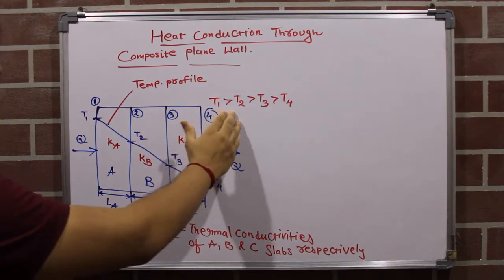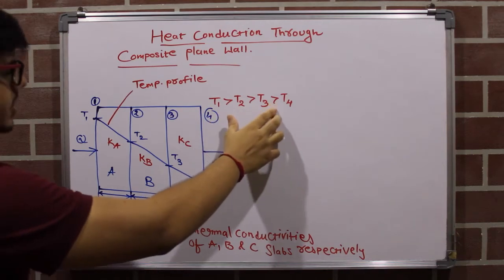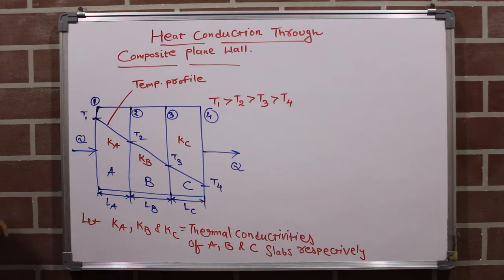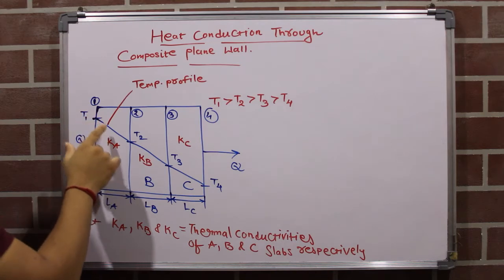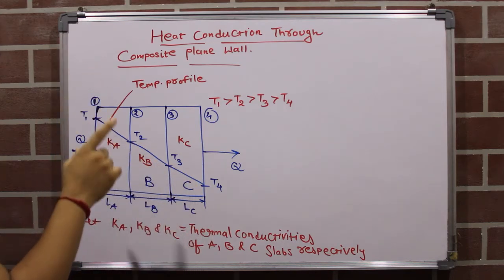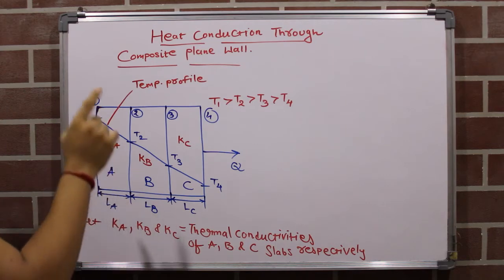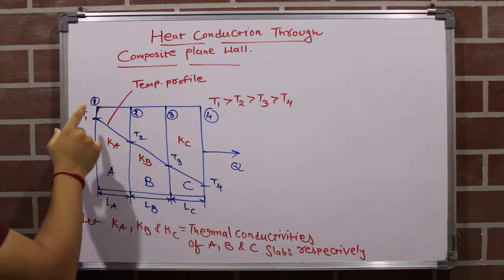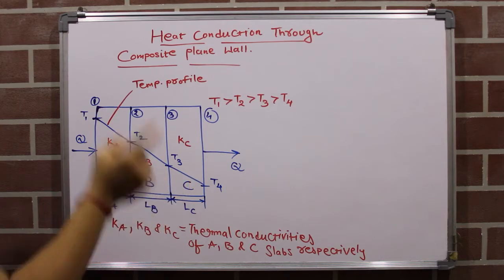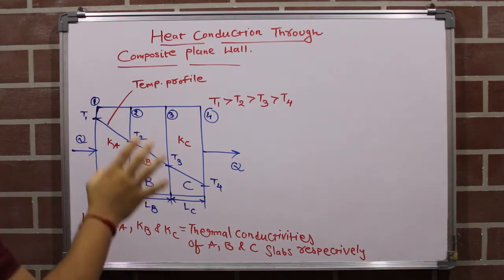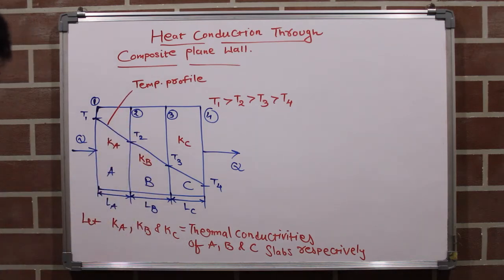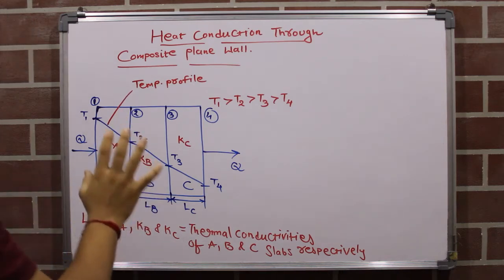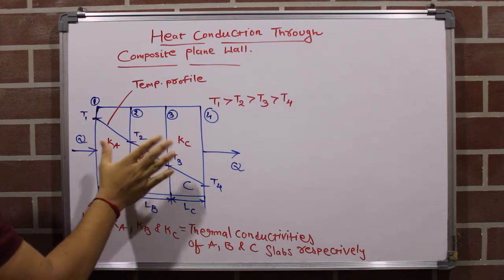The temperature T1 is greater than T2, which is greater than T3, which is greater than T4, so the heat conduction flow will be in this direction. In the case of a plane wall, the temperature profile is linear — in the previous video I discussed the equation of temperature and showed in detail why the temperature profile is linear. So in case of a plane wall we get a linear temperature profile. Now we will see the thermal circuit corresponding to this combination of plane walls.